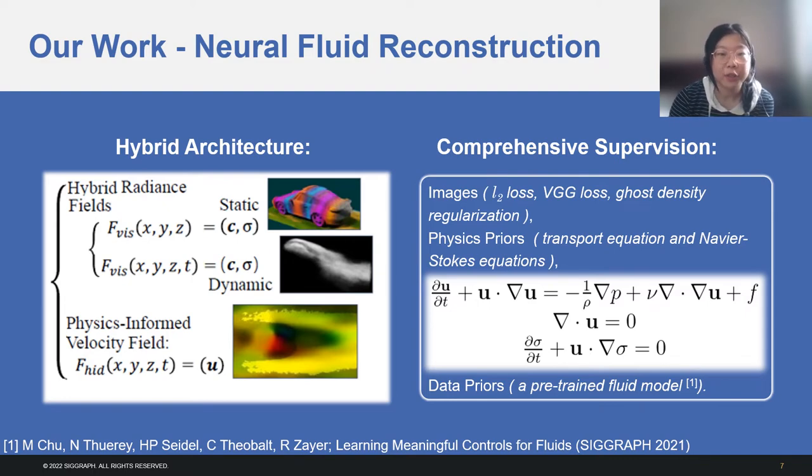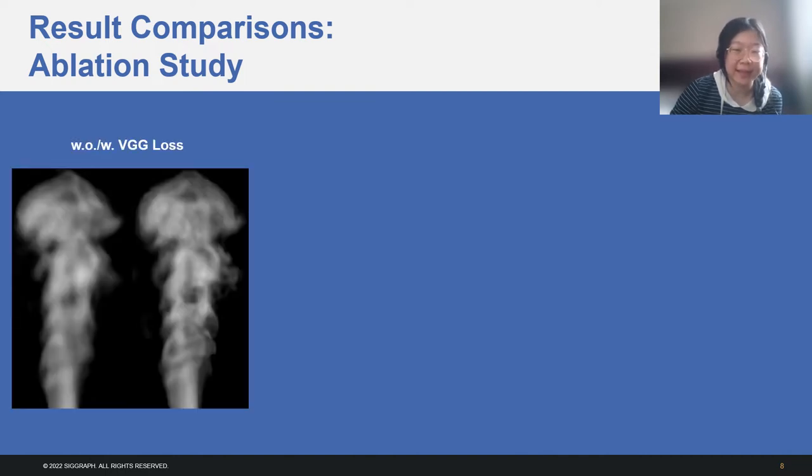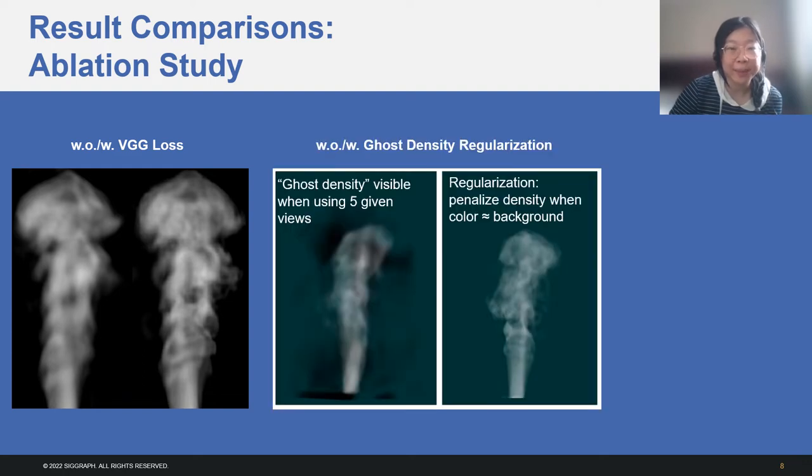In the following, I will show the effect of the supervision terms. On the image supervision, we found that VGG loss helps to keep better high-frequency details. We propose ghost density regularization to avoid empty regions being painted in the color of the background, which is black in the figure. We name this artifact as ghost density.